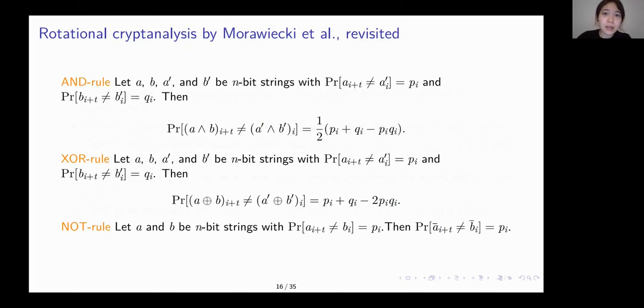There are three rules to compute the probability that the output difference is zero, given the probability that the input difference on certain bits is zero through three operations: the AND operation, XOR, and NOT. For instance, here, the probabilities for the input difference being one is p and q for the AND operation. And then after the AND operation, the output difference is one with the probability of p plus q minus p times q divided by two. So with these three rules, we can predict the probability of each output bit being unequal round by round.